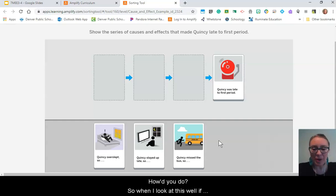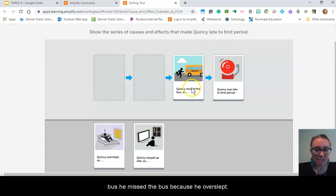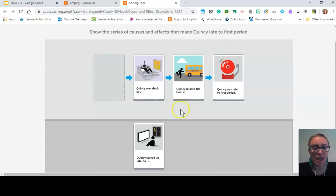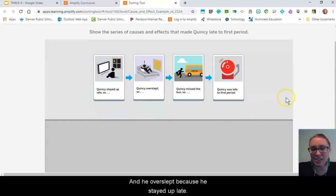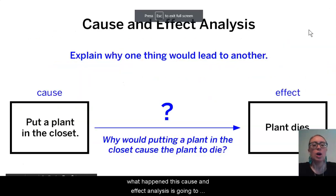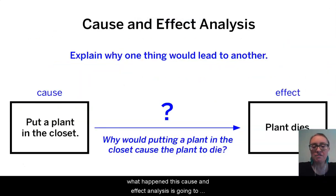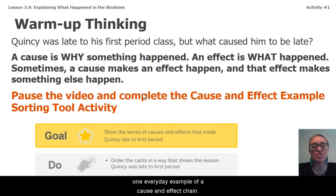How'd you do? Looking at this: he was late because he missed the bus. He missed the bus because he overslept. So he was late because he missed the bus because he overslept, and he overslept because he stayed up late. When we are today explaining to the Econauts what happened, this cause and effect analysis is going to be very important because we have to make it very clear to them why one thing led to another. Our Quincy example of being late to first period is one everyday example of a cause and effect chain.